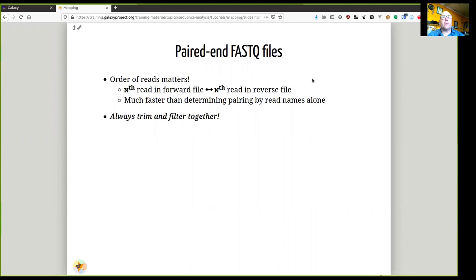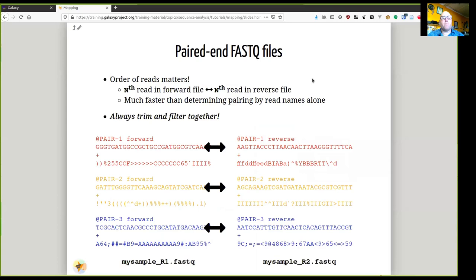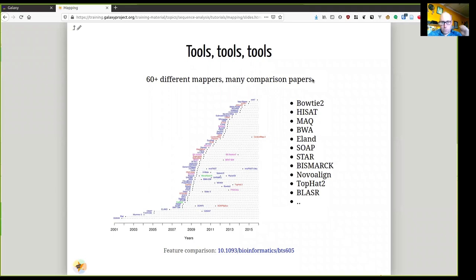So that means that when you are doing trimming and filtering, you should always process the forward and reverse files together. Otherwise, you might end up with a situation where if you remove a read from one of the files, you now end up with misaligned files.